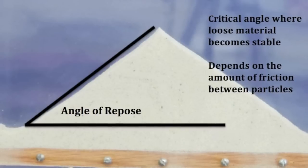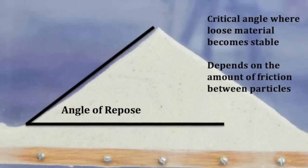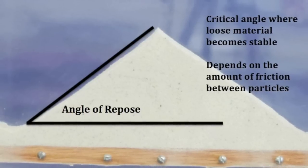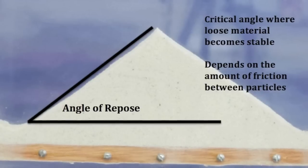If we measure the angle where this occurs, that would be the angle of repose. That's where the sand becomes stable. And in this case it's about 34 degrees.